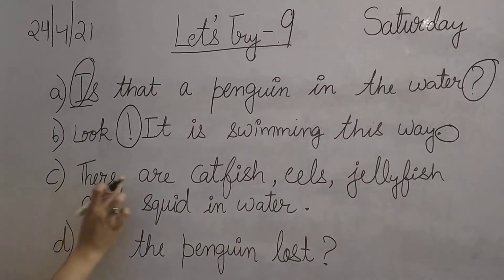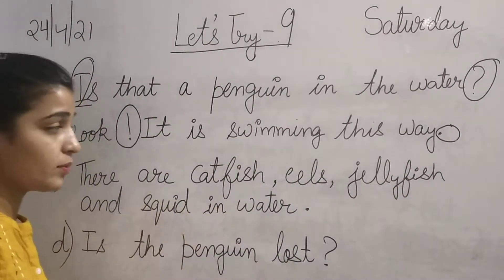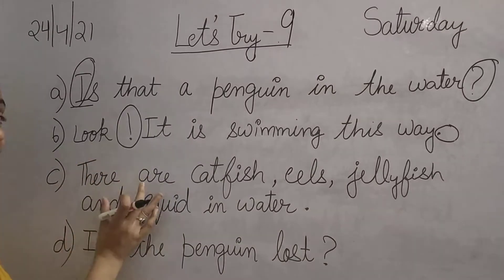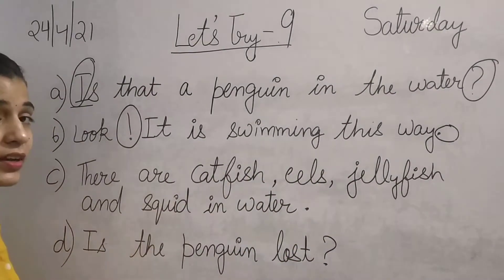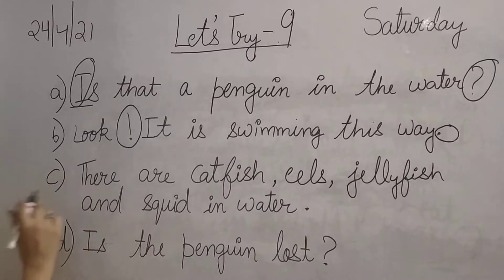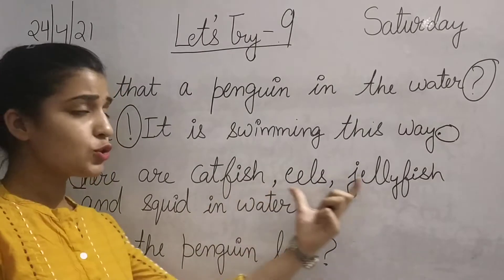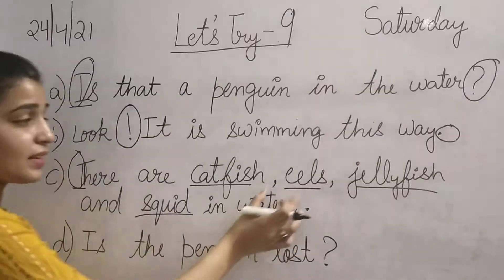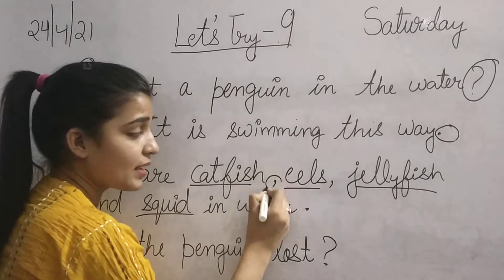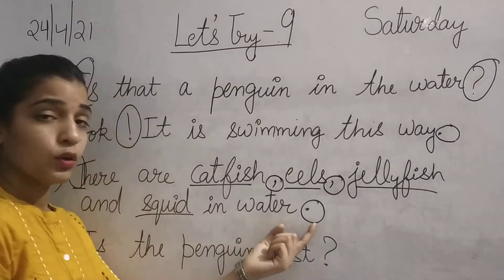The next sentence is: 'There are catfish, eels, jellyfish and squid in water.' These are all water animals. The first letter is capital, so we will circle T. And here we have commas — comma is also punctuation, so we will circle these commas. And at the end there is a full stop.